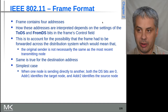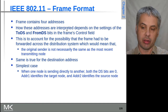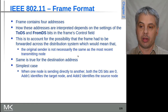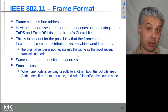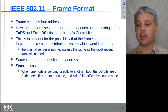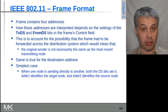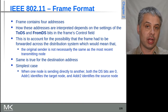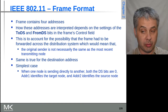We have those four addresses, and the way they are used depends on the values of the 'to DS' and 'from DS' bits. With these four addresses and the two bits, we can indicate whether a frame is going directly from a client to an access point or vice versa, or whether the frame needs to go to or has come from the distribution system.